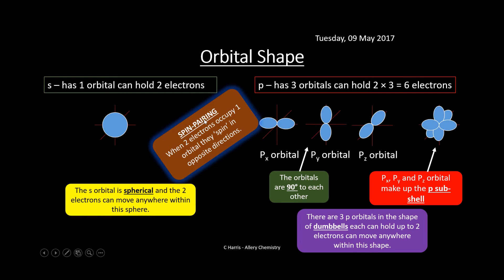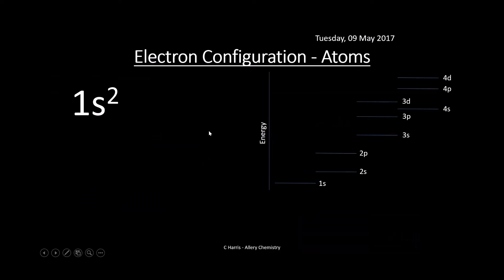We've got to know about spin pairing. When two electrons occupy one orbital, they spin in opposite directions. One will spin clockwise and the other will spin anticlockwise when they're in the same orbital. That's quite important.